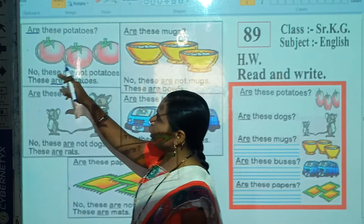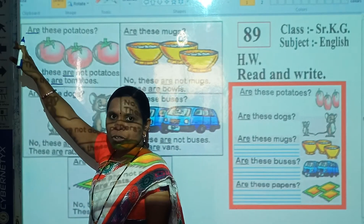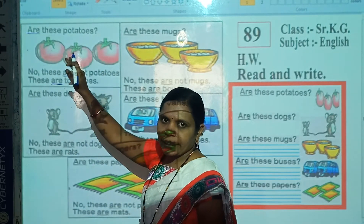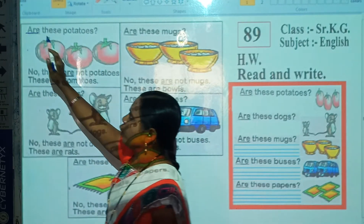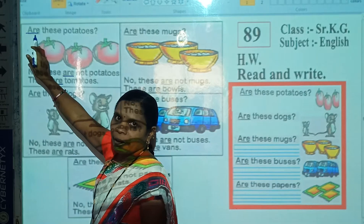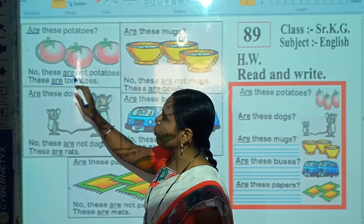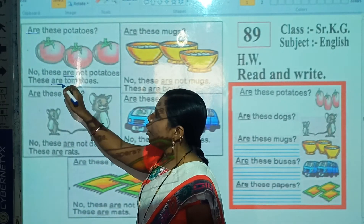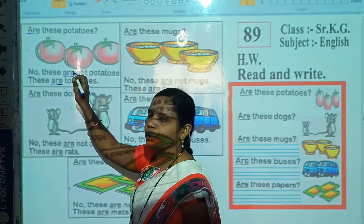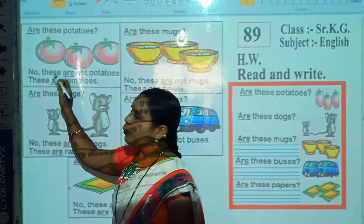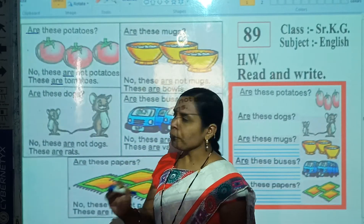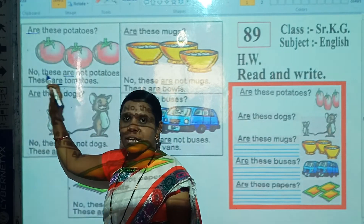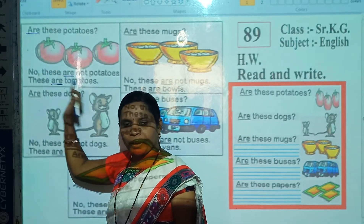Look carefully. When we ask questions about these objects, we use 'are'. And when we reply about these objects, we also use 'are'. Both times we use 'are', because here are more than one object, or many objects.